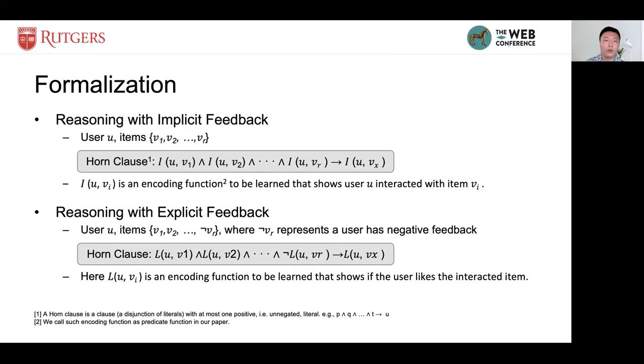According to the logic rules, if the implication is true and everything on the left side is true, then the only way to make the expression to be true is to let the right side variable be true. This is important because under implicit feedback settings,